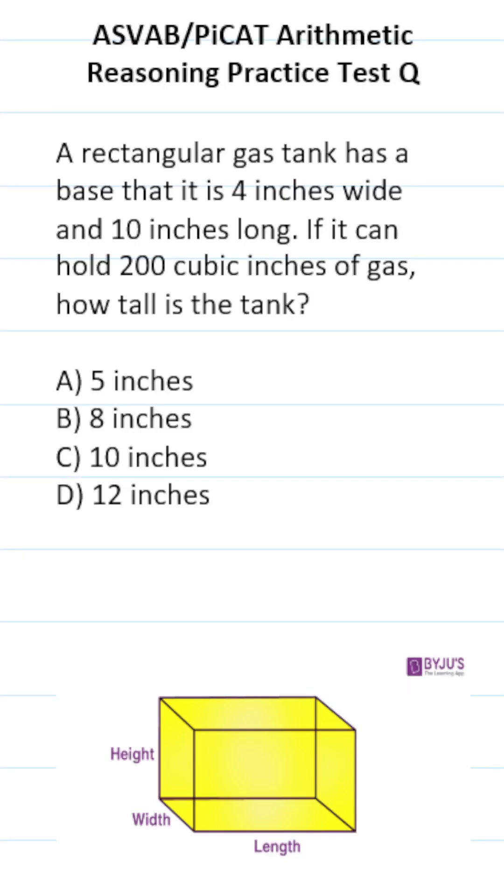This ASVAB PICAT Arithmetic Reasoning Practice Test question says, a rectangular gas tank has a base that is 4 inches wide and 10 inches long. If it can hold 200 cubic inches of gas, how tall is the tank?